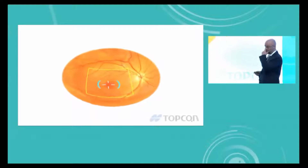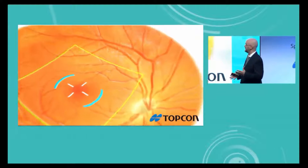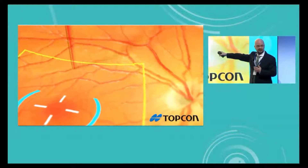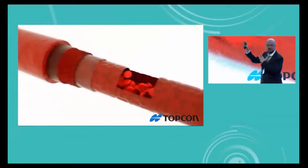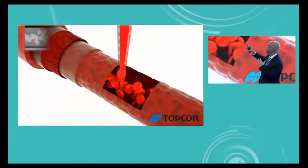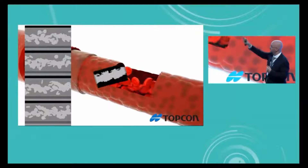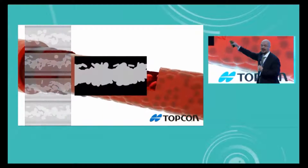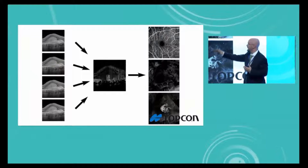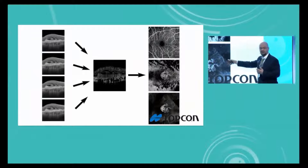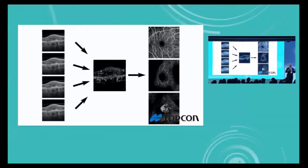In order to understand what projection artifacts are, first we have to understand what OCT angiography is. I took my right eye and created a little animation to show how we get an OCT angiography of a vessel. We take four scans of the vessel, put them together, and do a subtraction analysis or a movement contrast image to get an OCT angiography of the movement inside the vessels.